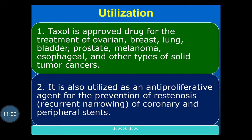Taxol is an approved drug for treatment of different types of cancer such as ovarian cancer, breast cancer, lung cancer, bladder cancer, prostate cancer, melanoma, and other types of solid tumor cancers. It is also utilized as an anti-proliferative agent for prevention of restenosis — recurrent narrowing of coronary and peripheral stents. Taxol can be prepared by means of tissue culture or callus culture, or obtained directly from the plants.